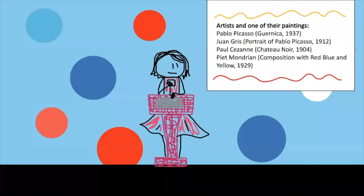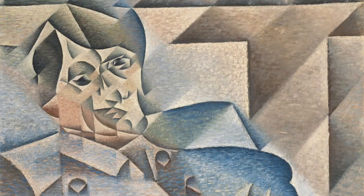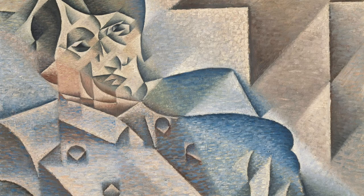The next art era is Cubism, from 1908 to 1920. Art here was very geometric and things would be painted in very interesting ways. Portrait of Pablo Picasso is a painting from the Cubism era.